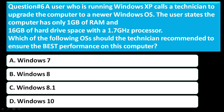Question number 6: A user running Windows XP calls a technician to upgrade to a newer Windows OS. The user's computer has only 1 GB of RAM, 16 GB of hard drive space, and a 1.7 GHz processor. Which of the following OS should the technician recommend to ensure the best performance? Option A is Windows 7, Option B is Windows 8, Option C is Windows 8.1, Option D is Windows 10. The correct answer is Option A — Windows 7.